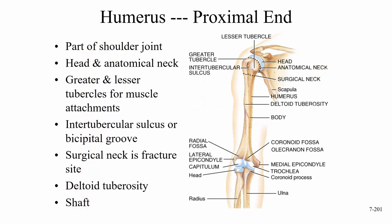The proximal end of the humerus forms part of the shoulder joint. It has a head, and attached to the head is a neck — actually two necks. There's the anatomical neck just below the head, and the surgical neck further down. We also have the greater tubercle and the lesser tubercle.